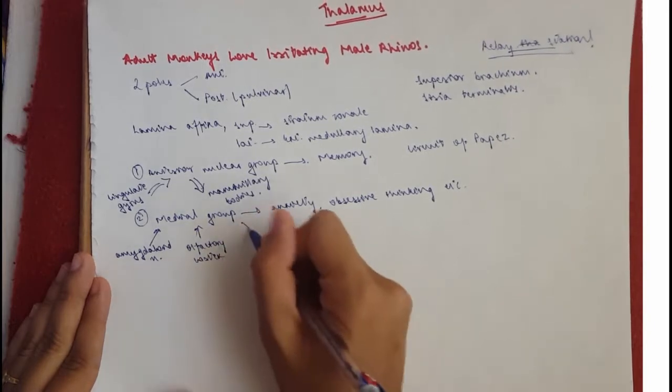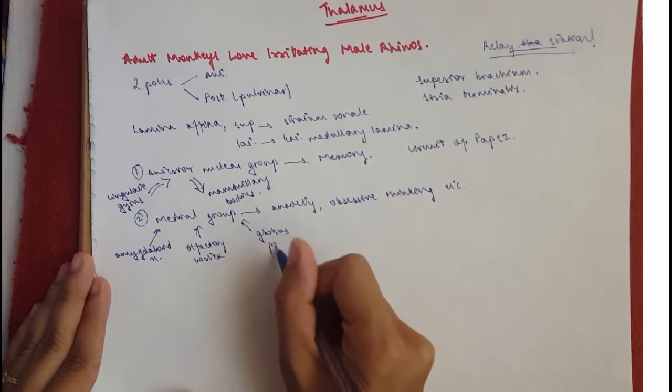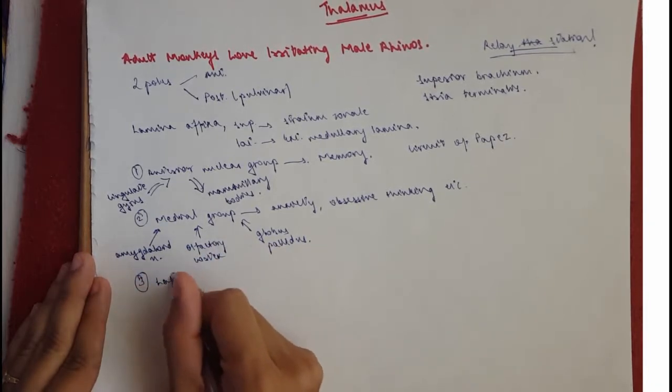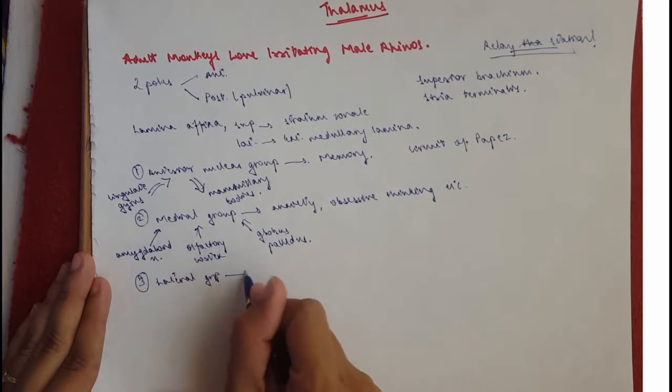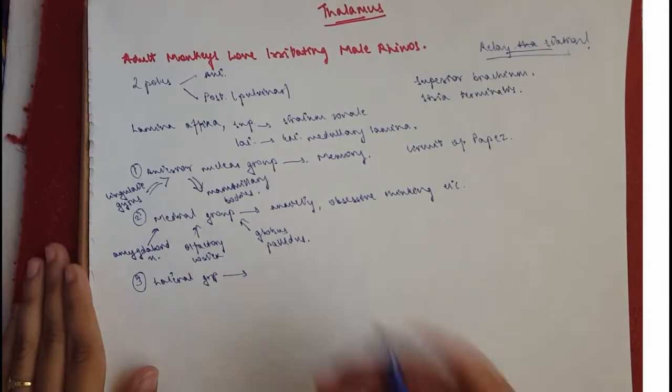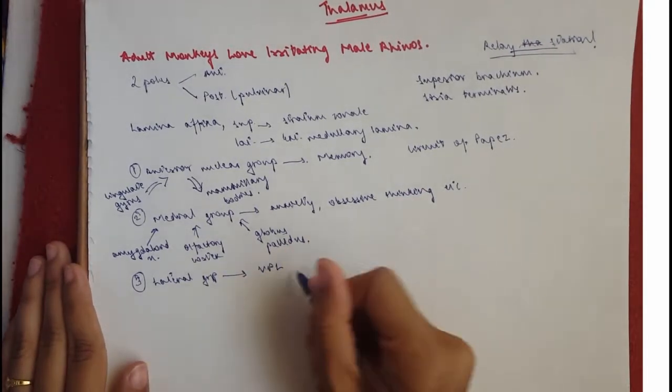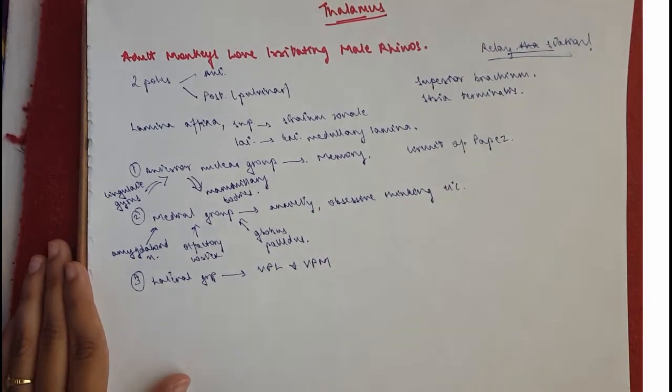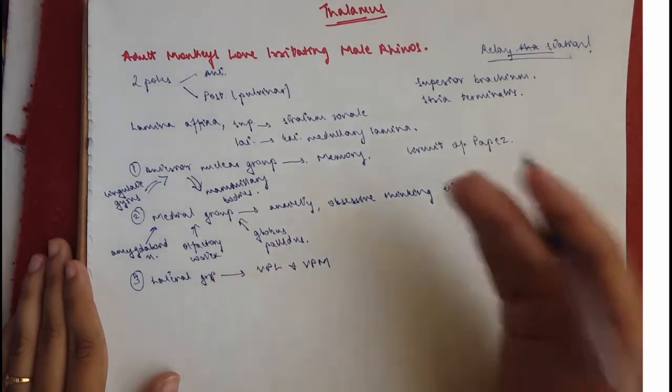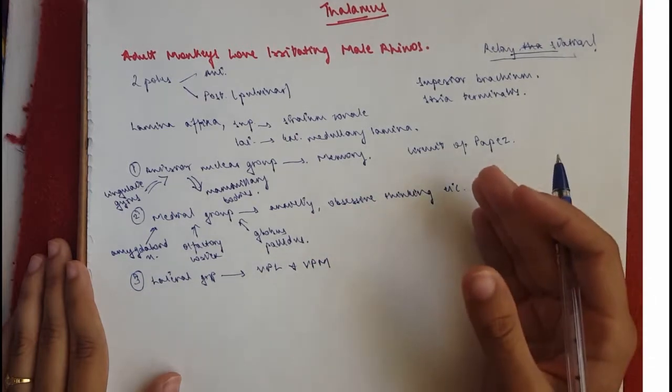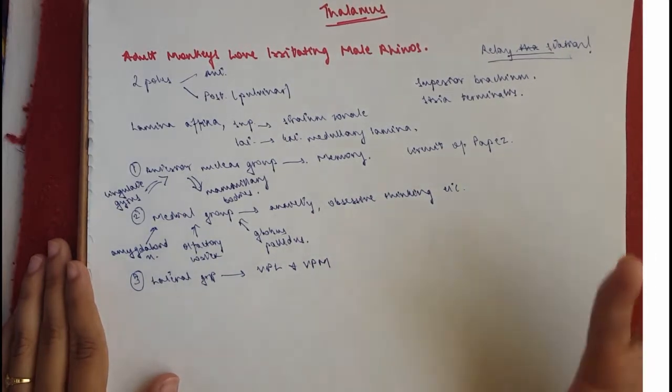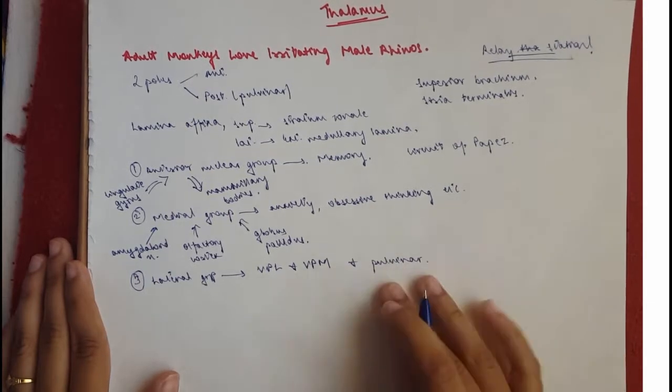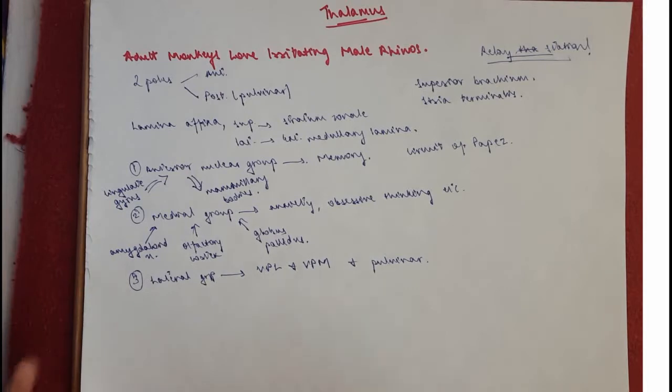Then you've got the third one which is love and that would be the lateral nuclear group. The lateral nuclear group is very important. If you have seen my pathway videos you'll know that the VPL ventral posterior lateral and VPM ventral posterior medial nuclei of the thalamus are important relay stations for the sensory tracks whether it's the dorsal column lemniscus pathway or the neospinothalamic pathway or the main principal sensory trigeminal pathway. And this also includes the pulvinar. The pulvinar receives from the metathalamus, the geniculate bodies, and your cortex.